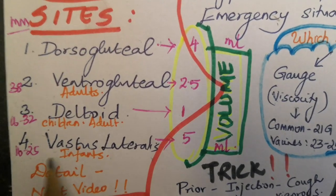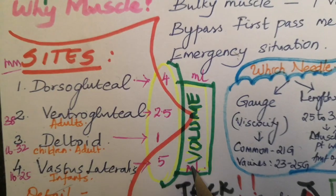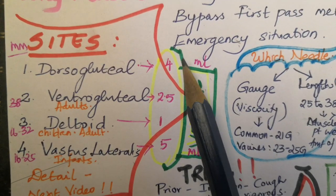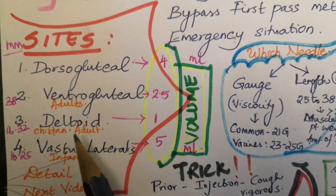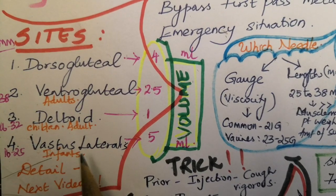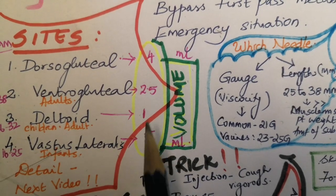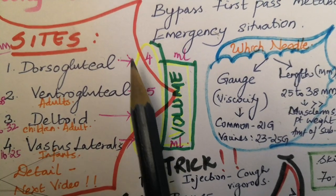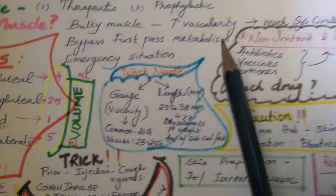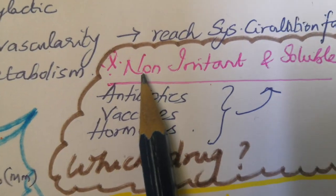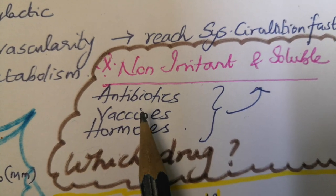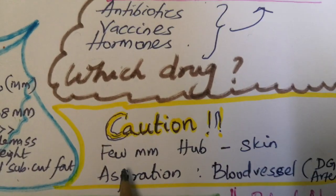Needle length for vastus lateralis is 16 to 25 mm. Volume limits per site: deltoid allows only 1 ml, vastus lateralis up to 5 ml, ventrogluteal 2.5 ml, and dorsogluteal 4 ml. The drug given should be non-irritant and soluble. Commonly given medications include antibiotics, vaccines, and hormones.